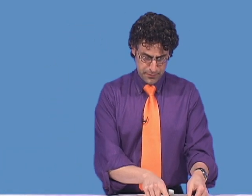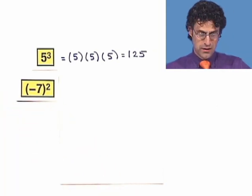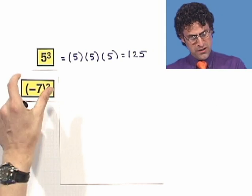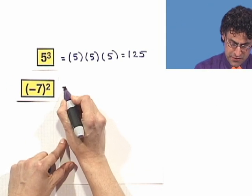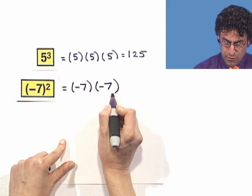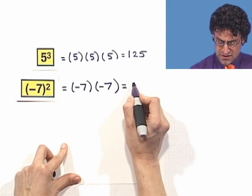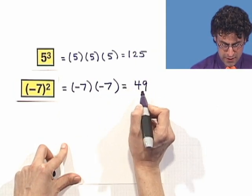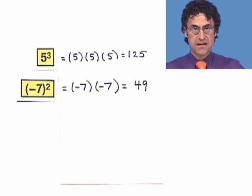What about something crazy like this? This is the quantity negative 7 squared. So what does that mean? Well, because that negative sign is lassoed within the parentheses, we have to be very careful. This is negative 7 multiplied by itself. Well, a negative times a negative is a positive. 7 times 7 is 49, so this is 49. Here, the base is negative 7 and the exponent is 2.